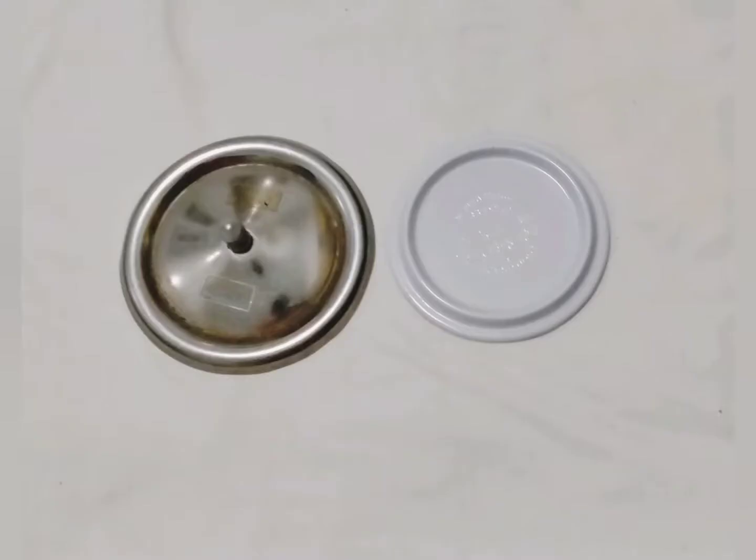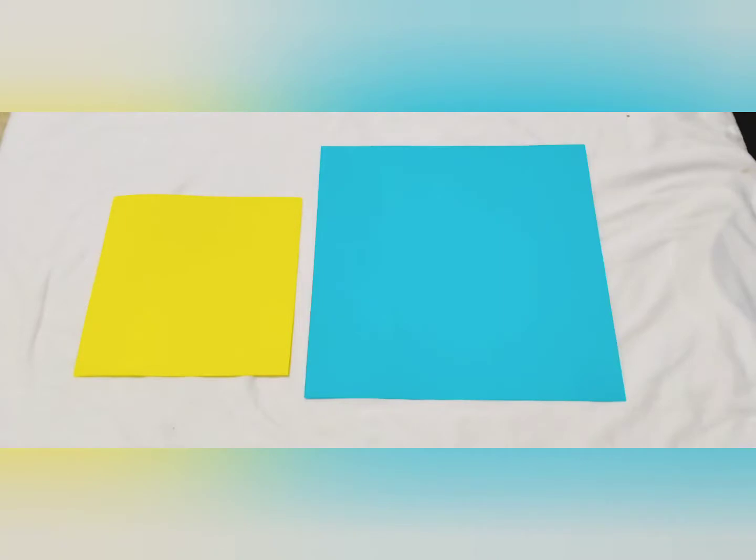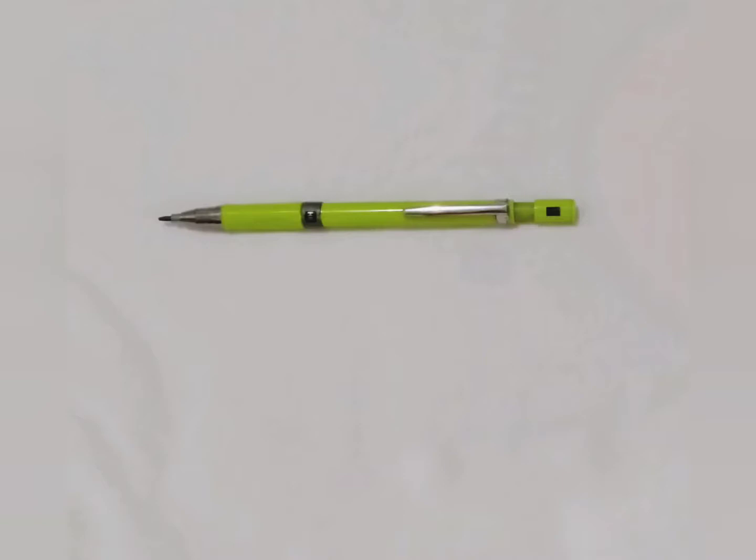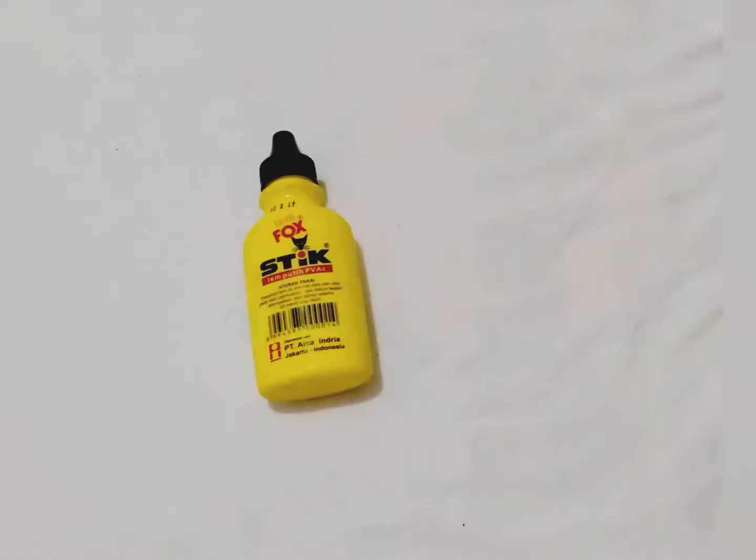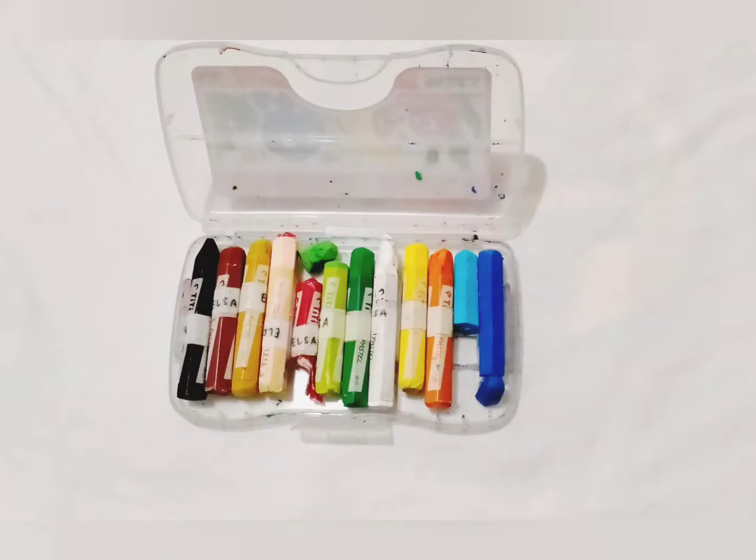First, you need to have 2 cup lids like this with different sizes. One is smaller than the other one. A piece of blank paper, two colored papers, a pencil, a pair of scissors, glue, and coloring too.